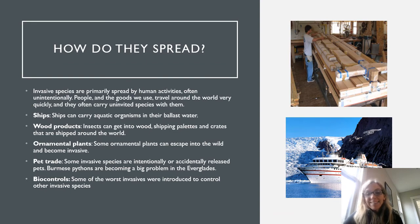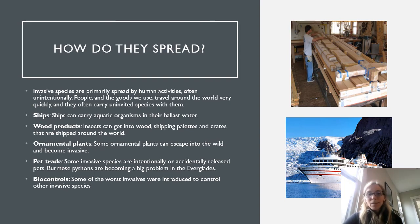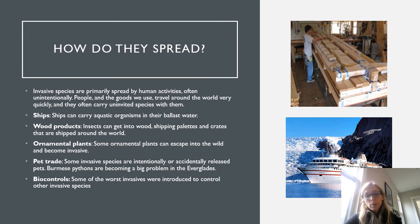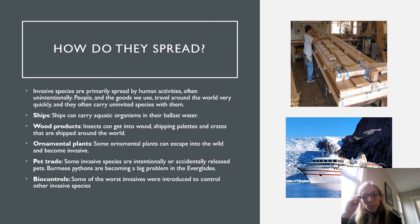There are a number of ways that invasive species are introduced. They are spread primarily by human activities — often unintentionally, sometimes intentionally. People and goods travel around the world very quickly. We see invasives coming in on ships through ballast water, as pests within wood products, sometimes within shipping pallets or crates. We see ornamental non-native plants escaping into the wild and becoming invasive, and we're increasingly seeing impacts from the pet trade.